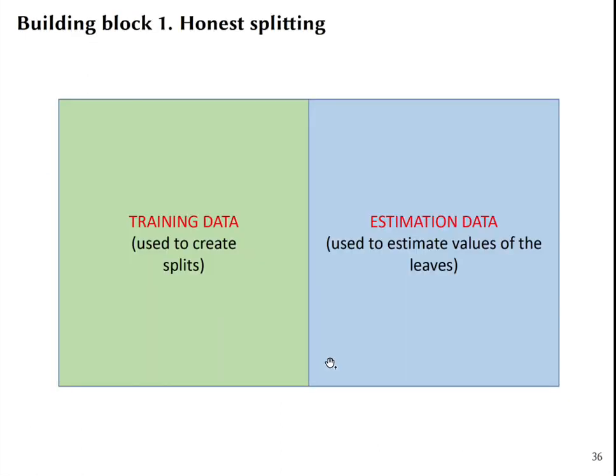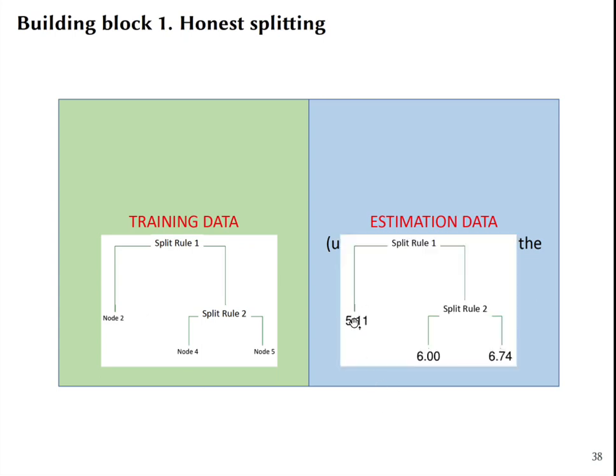First of all, causal trees use honest splitting, meaning that it uses training data to create splits, but then uses separate untouched data to estimate values of the leaves. So it is a similar idea to cross-fitting in double machine learning. You use training data to decide how to split the data based on the values in the training data, but then the predictions of treatment effects you get only on a separate sample.